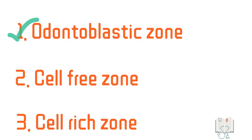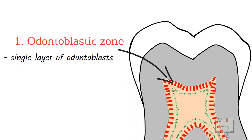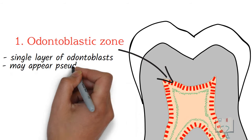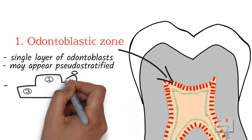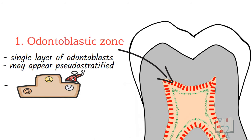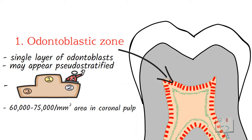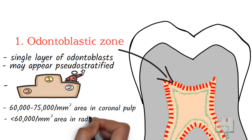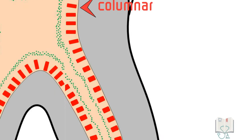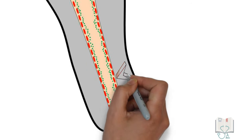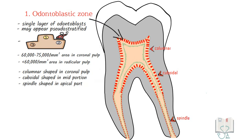The odontoblastic zone contains only a single layer of odontoblasts at the periphery of the pulp, just adjacent to the dentine, though it may appear pseudostratified due to crowding. Odontoblasts are the most distinctive cells and are the second most common cells in number — about 60,000 to 75,000 per square millimeter in coronal pulp, and fewer in radicular pulp. Fully differentiated odontoblasts in coronal pulp are columnar in shape, cuboidal in the mid-root, and spindle-shaped in the apical part.